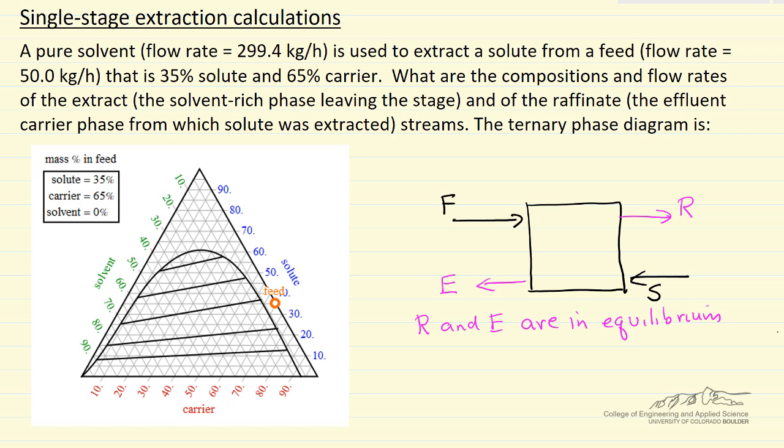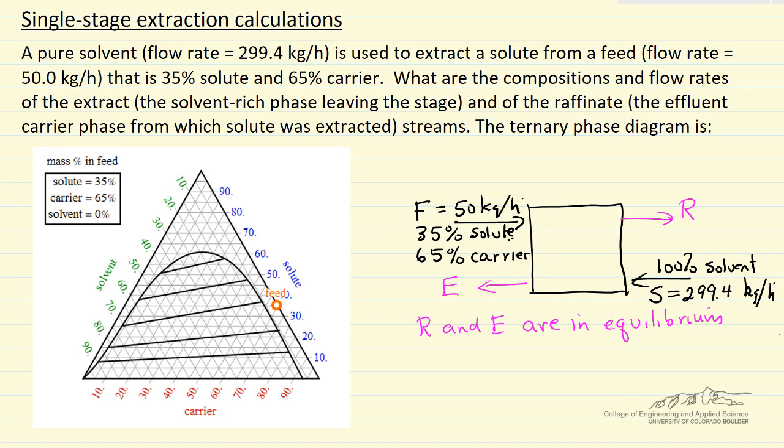So now on the diagram, I'm going to write down the values that we know, and then we'll start using the phase diagram. So you can see on the phase diagram, we've already located the feed here, 35% solute, so 35%, and it has no solvent, so it's right on this side of the triangle. Well, since this is a pure solvent feed, then the solvent is here.